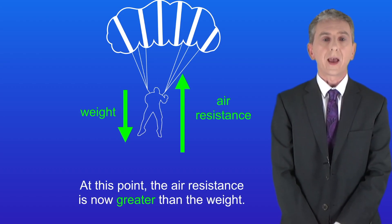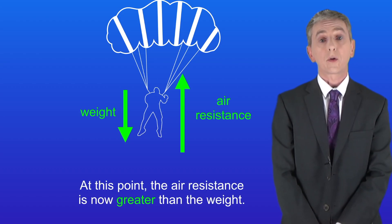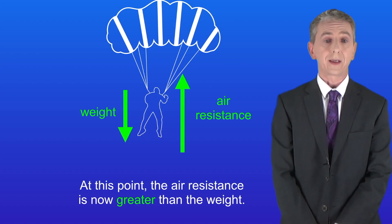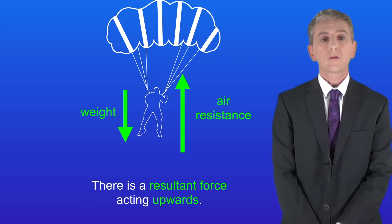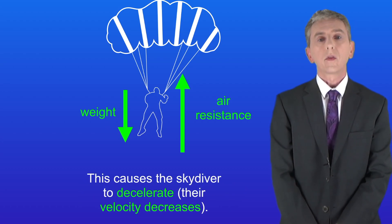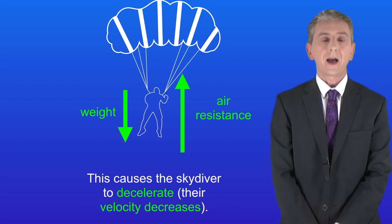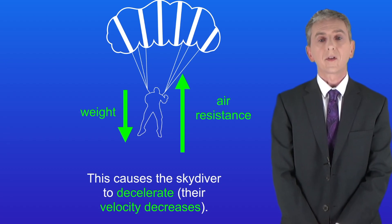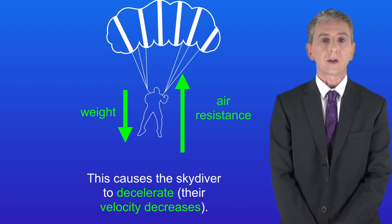At this point the air resistance is now greater than the weight, so there's a resultant force acting upwards. This causes the skydiver to decelerate — in other words their velocity decreases.